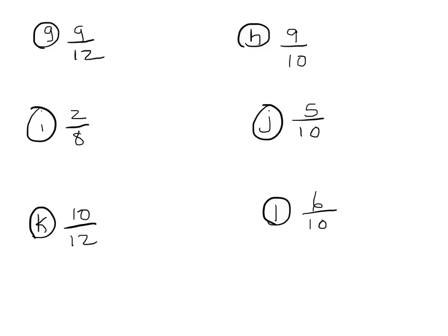We have nine-twelfths. What number do nine and twelve have in common? We know multiples of three, so let's count by threes: three, six, nine, twelve. Bingo — it looks like three. So we divide by three over three. Three goes into nine three times, three goes into twelve four times. Three-fourths — that's as low as it's going to get.